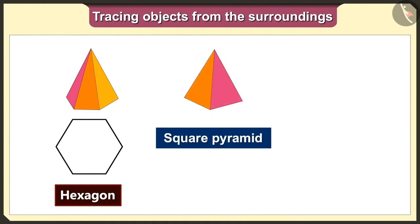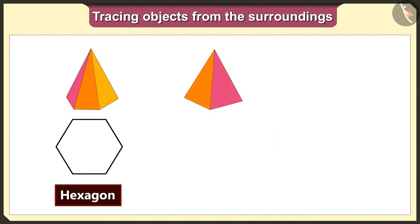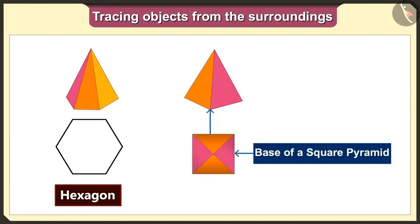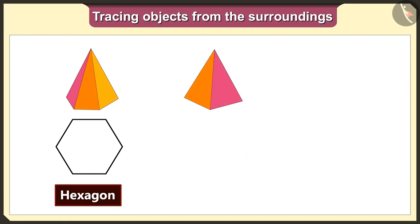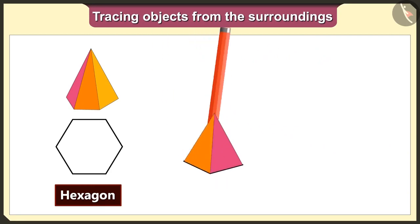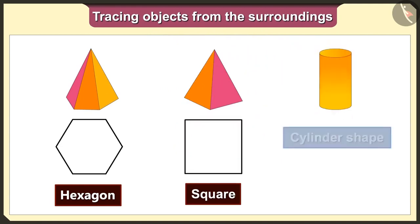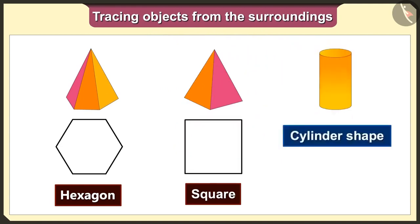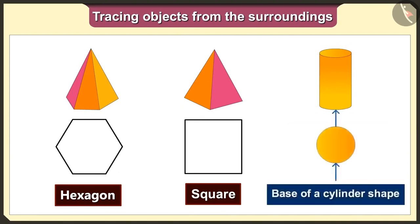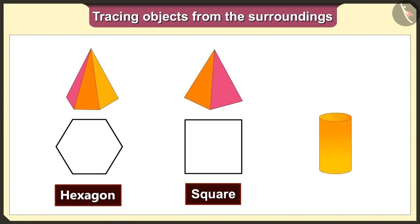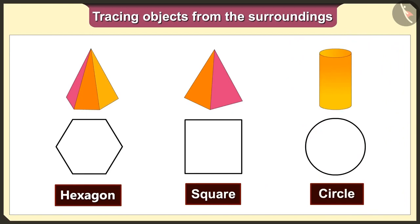Now we will trace the square pyramid. The base of the square pyramid is a square, so we will get a square shape when we trace this pyramid. This is a cylindrical shape. The base of a cylinder is a circle, so we will get a circle shape when we trace the cylinder.